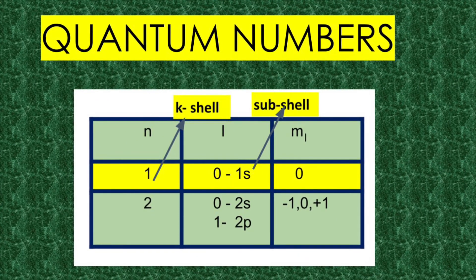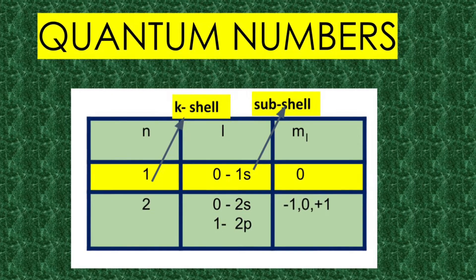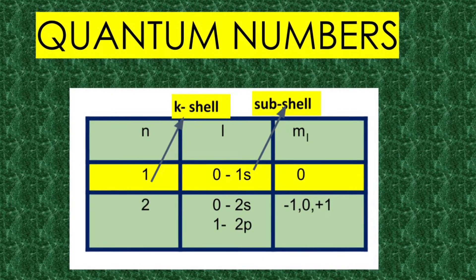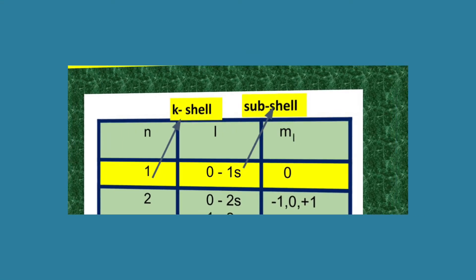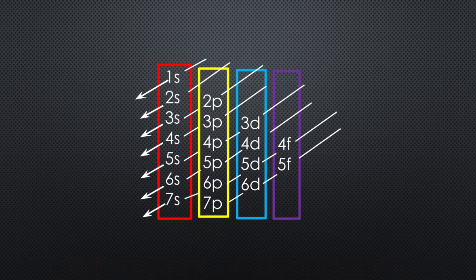A set of three quantum numbers—principal quantum number, azimuthal quantum number, and magnetic quantum number—are arranged due to the solution of Schrodinger wave equation. These orbitals are arranged based on their energy levels.